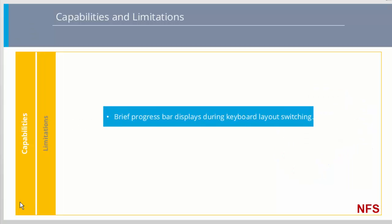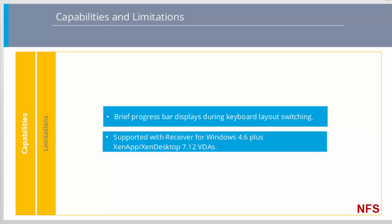When the user switches the keyboard layout on the client endpoint from one language to another, they will briefly see a message while the synchronization is in progress. They can then continue working with the new desktop layout. This feature is supported with Citrix Receiver for Windows 4.6, the 7.12 desktop OS VDA, and the 7.12 server OS VDA.